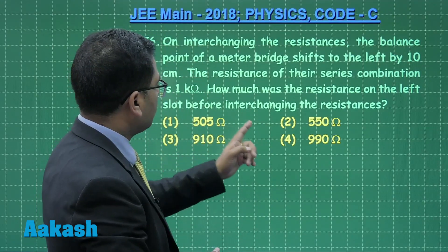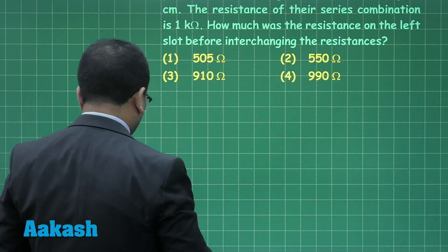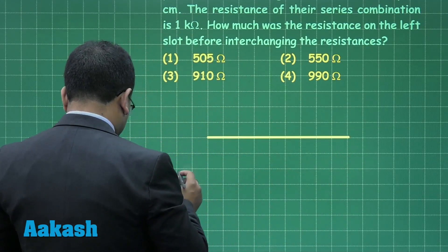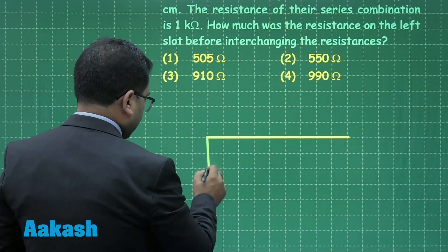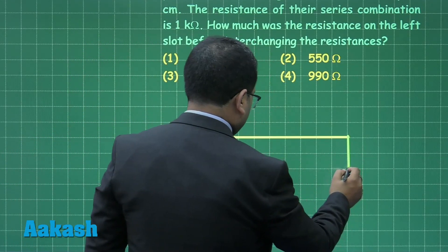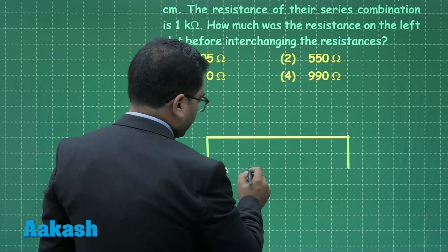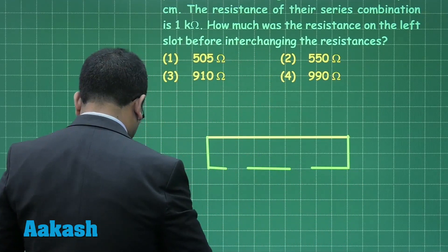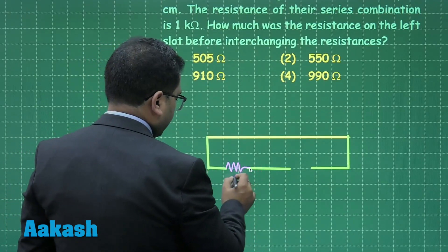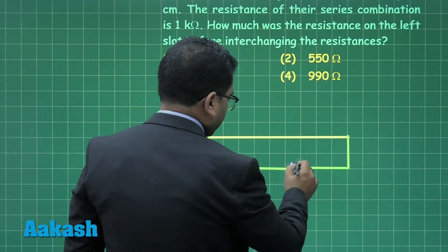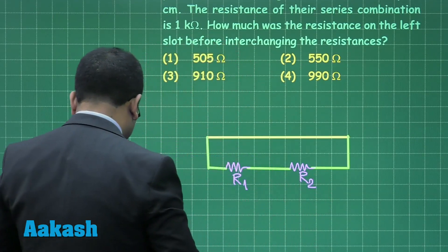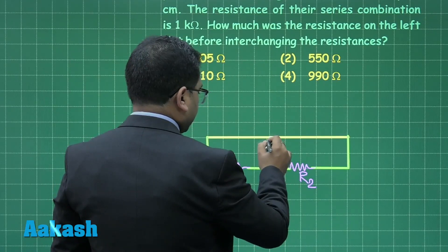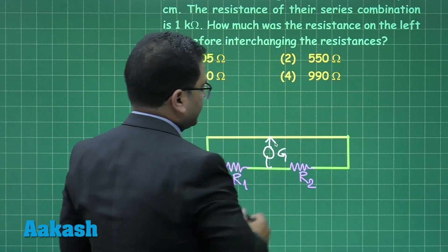We need to find how much resistance was on the left slot before interchanging. Here is the schematic diagram of the meter bridge with a connecting wire, a slot for R1, a slot for R2, a galvanometer, and a jockey. The total wire length is 1 meter or 100 centimeters.